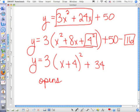How does it open? It opens up. What's the vertex? Negative 4, 34. Very good. Negative 4, 34. Yes, sir.